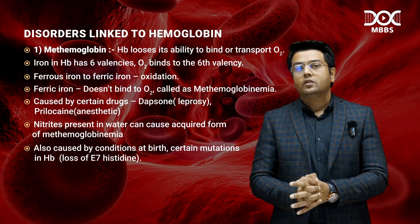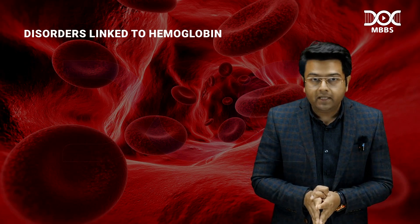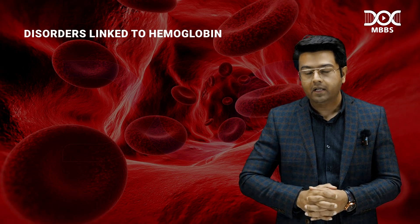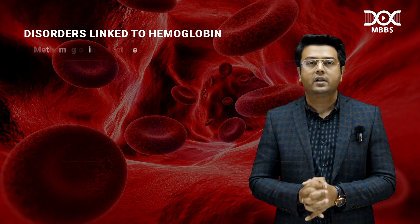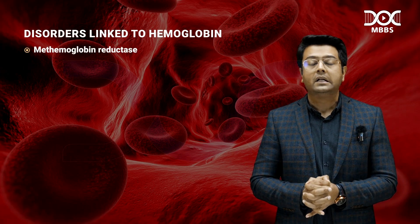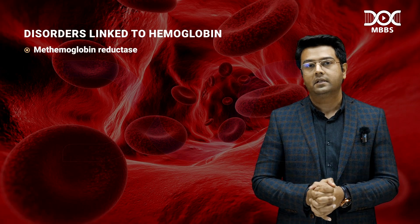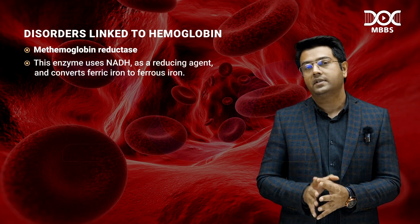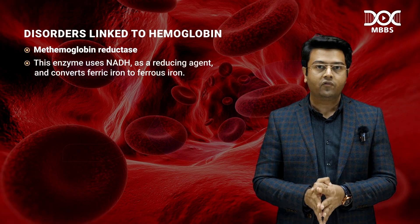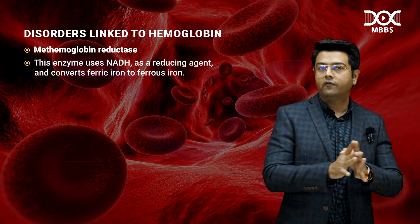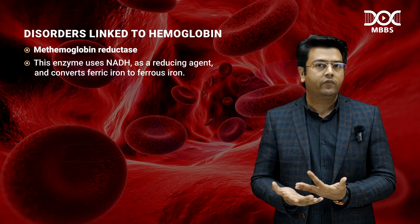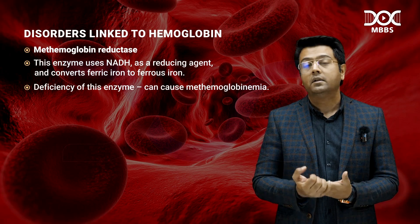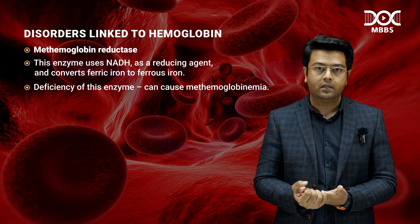Whenever methemoglobinemia appears, we have an enzyme system in our body called methemoglobin reductase. This enzyme uses NADH as a reducing agent, which converts ferric iron back to ferrous iron. People born with a deficiency of this enzyme may also develop methemoglobinemia.